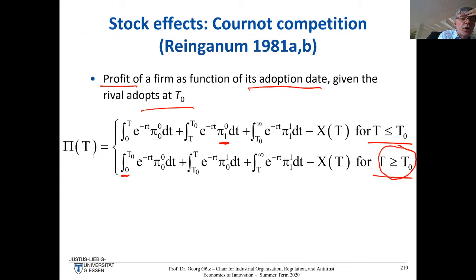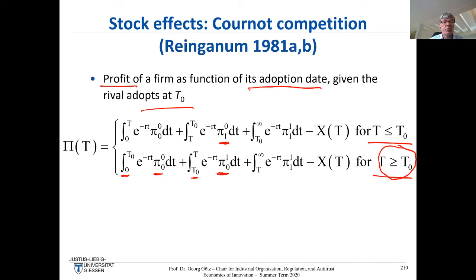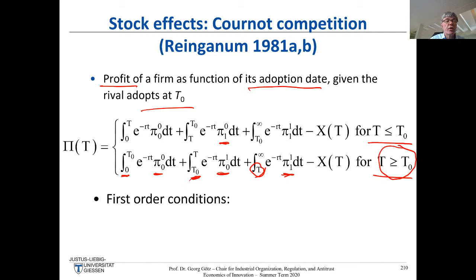Conversely, if I'm the late adopter, until time T₀ nothing changes, but at T₀ my profit drops even though I haven't done anything — because my rival now has lower costs from adopting the new technology. My profit stays lower until I finally adopt at time T, at which point I catch up. This gives a very similar formulation to before, just slightly more complicated due to the second firm.